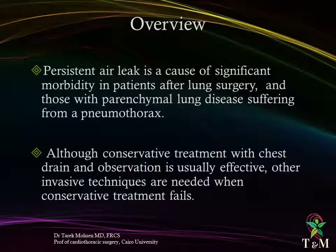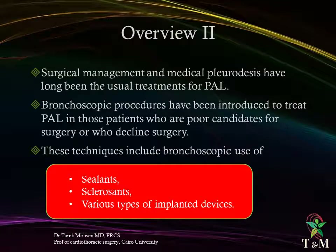Overview: Persistent air leak is a cause of significant morbidity in patients after lung surgery and in those with parenchymal lung disease suffering from a pneumothorax. Although conservative treatment with chest drain and observation is usually effective, other invasive techniques are needed when conservative treatment fails. Surgical management and medical pleurodesis have long been the usual treatments for persistent leak. Bronchoscopic procedures have been introduced to treat leaks in patients who are poor candidates for surgery or who declined surgery. These techniques include bronchoscopically applied sealants, sclerosants, and various types of implanted devices.